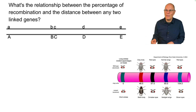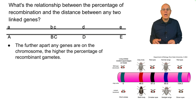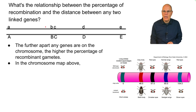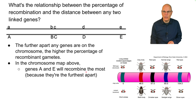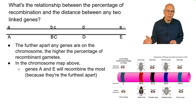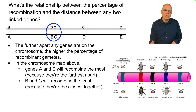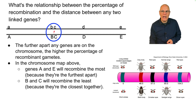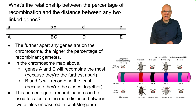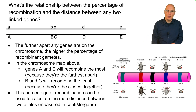The further apart any two genes are on the chromosome, the higher the percentage of recombinant gametes. In the chromosome map shown, genes A and E will recombine the most because they're the furthest apart — crossing over can occur at many positions between them, almost resembling independent assortment. Genes B and C recombine the least because crossing over must occur at a very specific spot between them. The percentage of recombination can be used to calculate the map distance between two alleles.